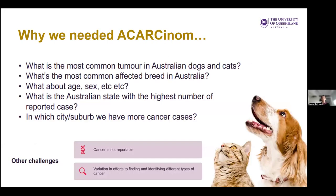One of the questions I usually get when talking about cancer registries in animals is: why do we need them? In particular, why we needed our project, A-carcinome. In Australia, there are 9 million dogs and cats, but we don't have any reliable and accurate information about cancer cases in our pets. The only way to get that information is through a systematic and standardized collection of cancer cases.